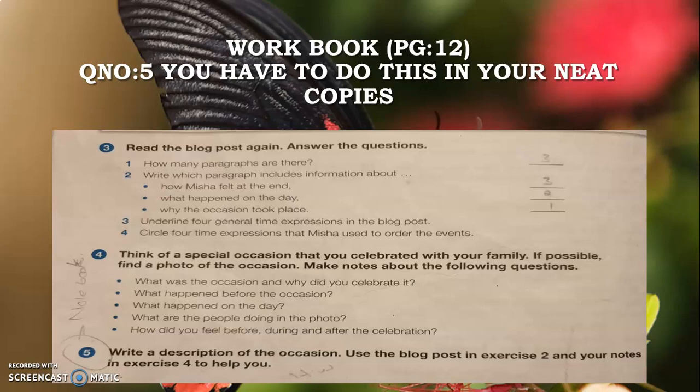Question Number Four: Think of a special occasion you celebrated with your family. If possible, find a photo. Make notes about: what was the occasion and why did you celebrate it; what happened before the occasion; what happened on the day; what the people are doing in the photo; and how you felt before, during, and after the celebration. Question Number Five: Write a description of the occasion using the blog in Exercise Two and your notes in Exercise Four.